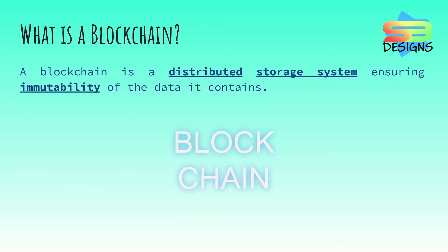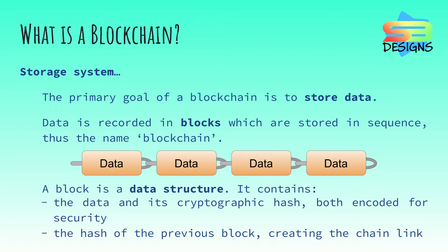What is a blockchain? A blockchain is a distributed storage system ensuring immutability of the data it contains. The primary goal of a blockchain is to store data. Data is recorded in blocks, which are stored in sequence, thus the name blockchain.